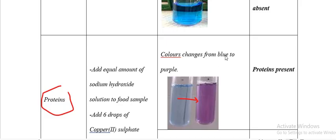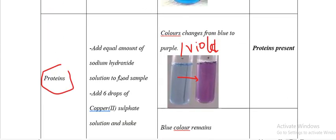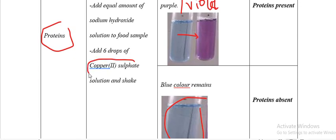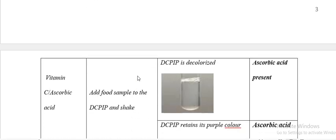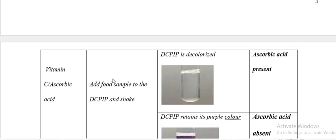The colour may also change from blue to violet, and if it changes to violet, proteins are present — so it may be either purple or violet. A common mistake: students add copper(II) sulfate before sodium hydroxide. The correct order is sodium hydroxide first, then copper(II) sulfate dropwise. Copper(II) sulfate must be written correctly to score marks.